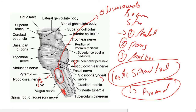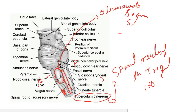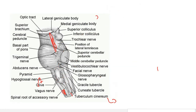Just posterior to the olive, there is another elevation called the tuber synodium. This tuber synodium is the elevation of the spinal nucleus of the trigeminal nerve. The trigeminal nerve contains nuclei that extend from the medulla all the way to the midbrain.